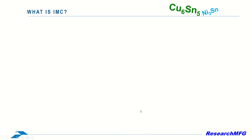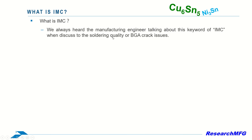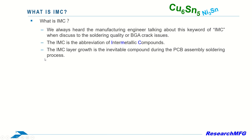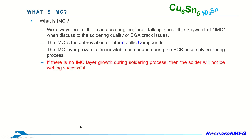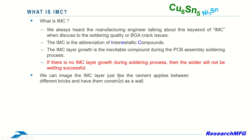So, what is IMC? We always hear manufacturing engineers talking about this keyword — IMC — when discussing soldering quality or BGA crack issues. The IMC is the abbreviation of Intermetallic Compounds. The IMC layer growth is an inevitable compound during the PCB assembly soldering process. If there is no IMC layer growth during the soldering process, then the solder will not wet successfully. We can imagine the IMC layer just like cement applied between different bricks, constructing a wall.